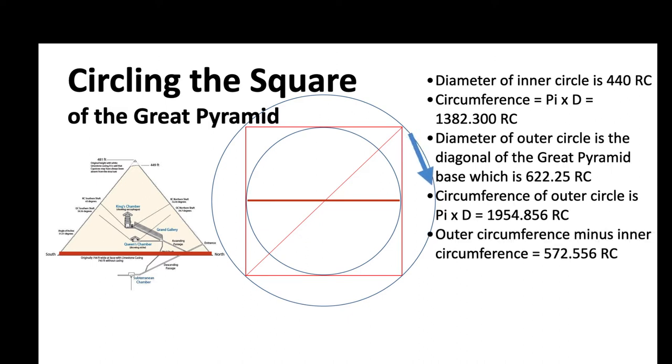If we subtract those two, we take the outer circumference of 1,954 royal cubits and subtract the inner circumference of 1,382 royal cubits. The difference is 572.5 royal cubits. Let's convert that to meters: 299.79 meters.